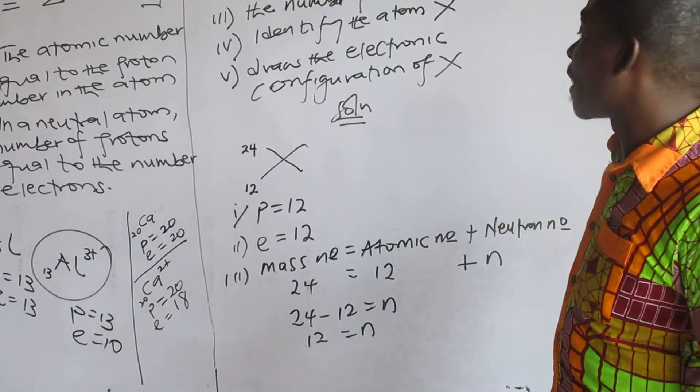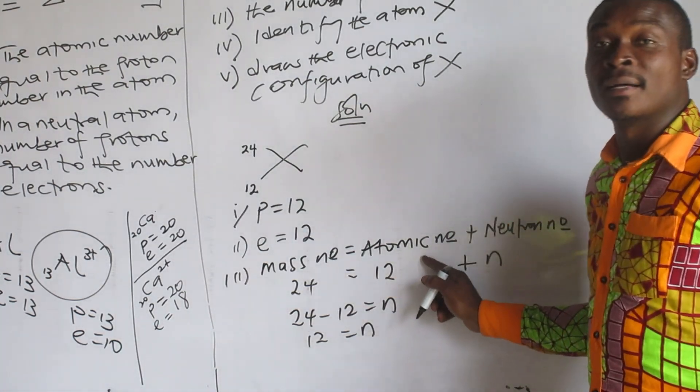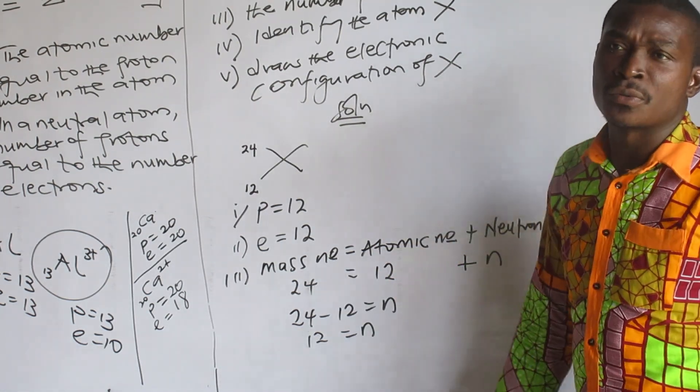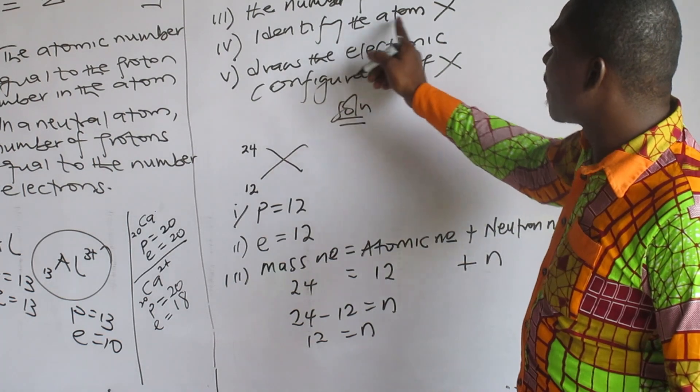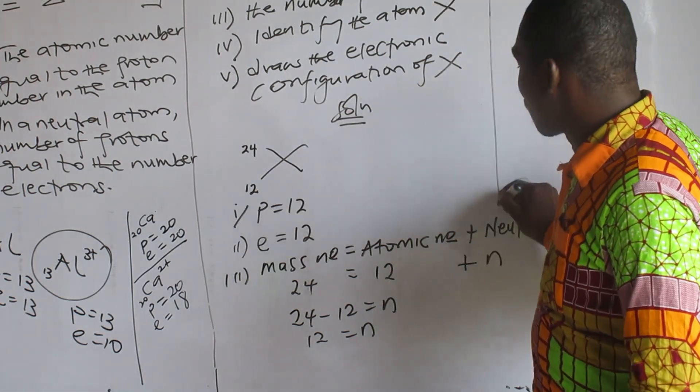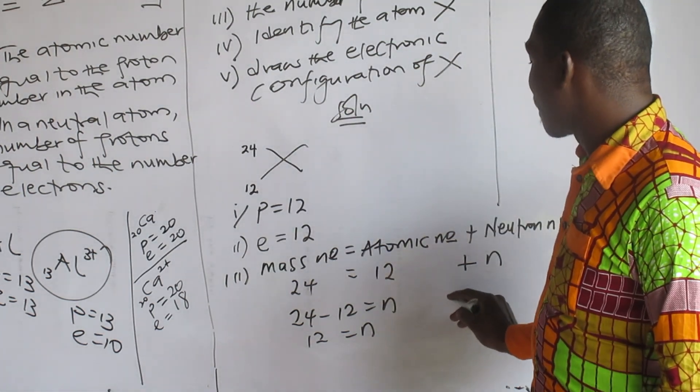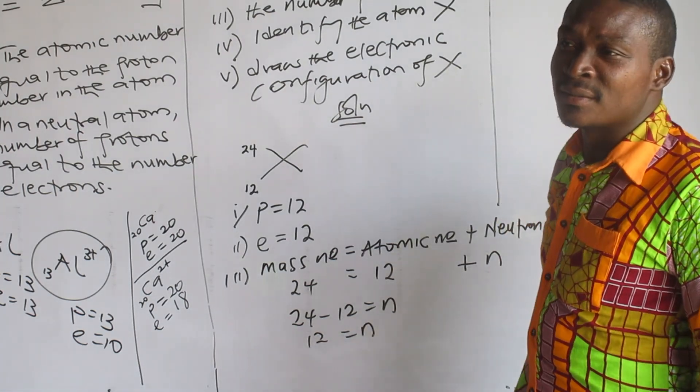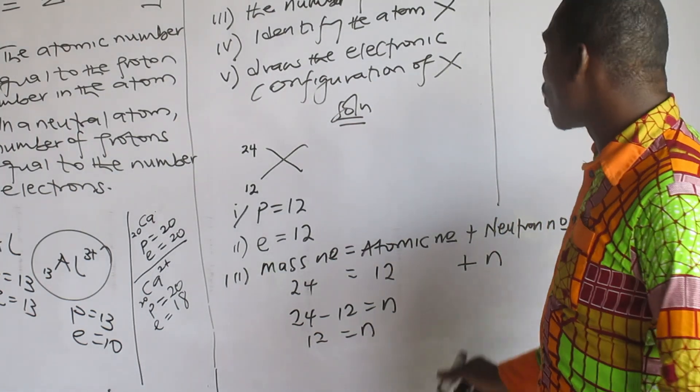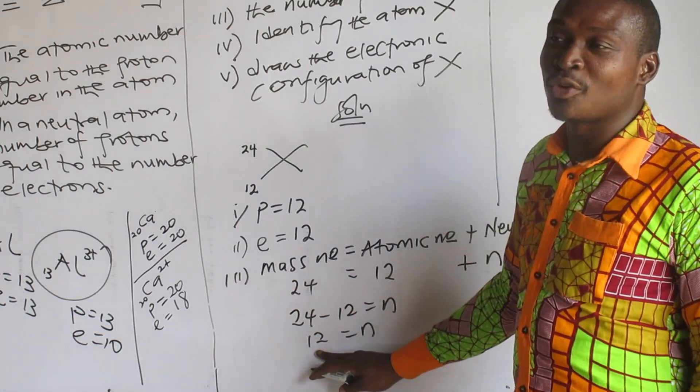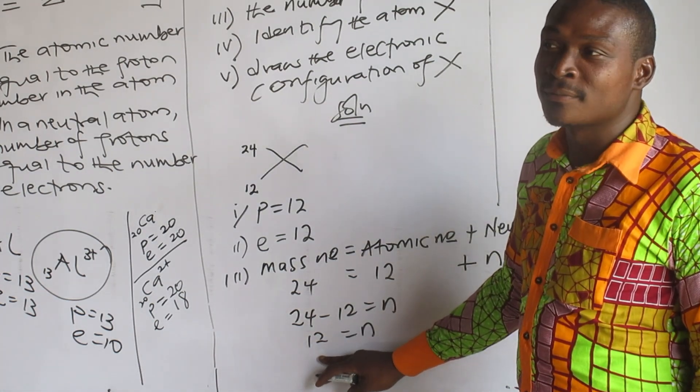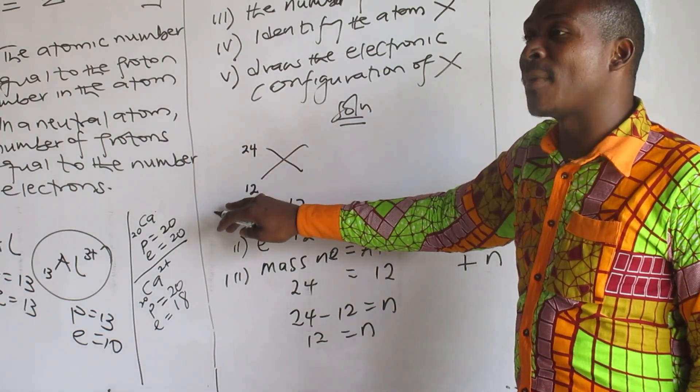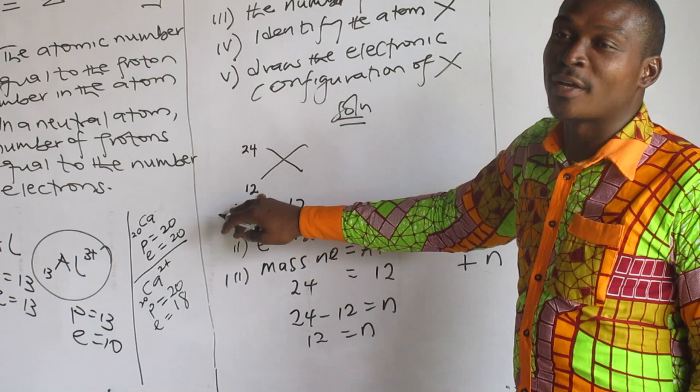Similarly, if you are given atomic number and neutron number, you have to find mass number. It's the same process. Now, identify atom X. Which atom has atomic number 12? That is magnesium. We don't use the number of neutrons to identify the atom. We use atomic number to identify the atom, not the neutrons.